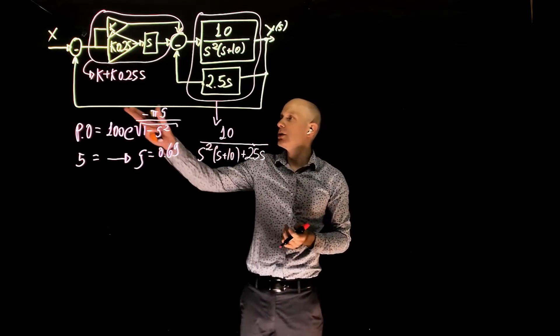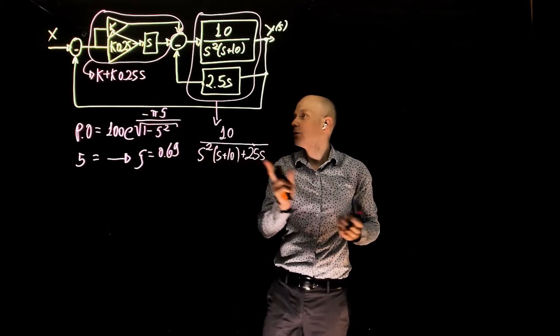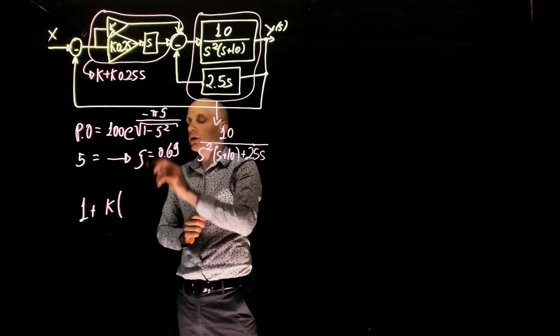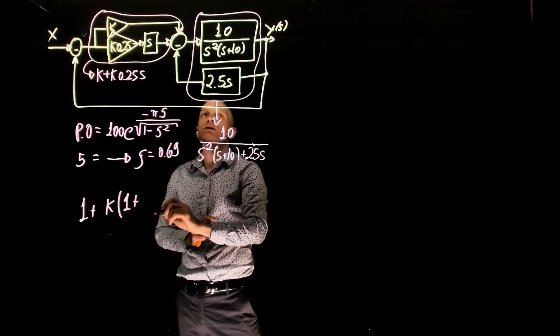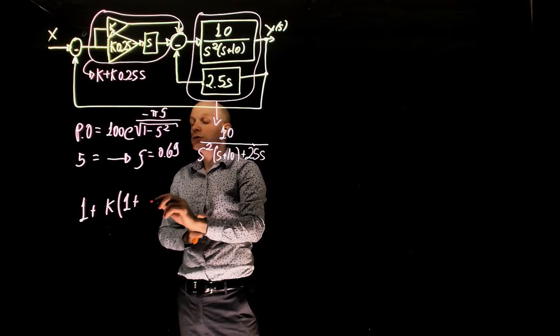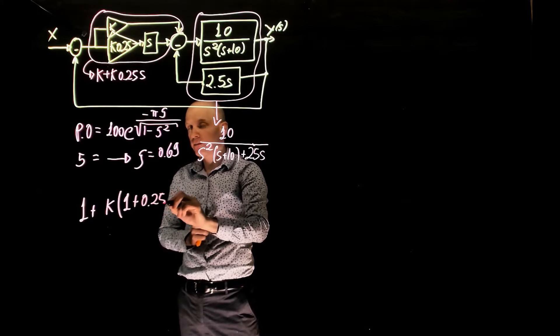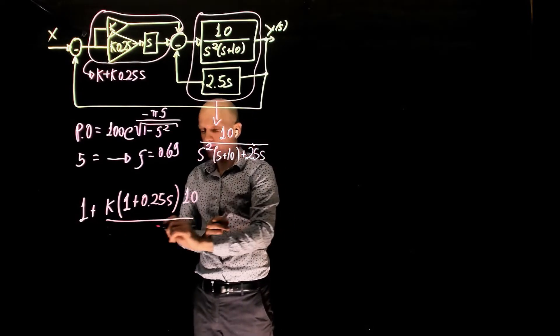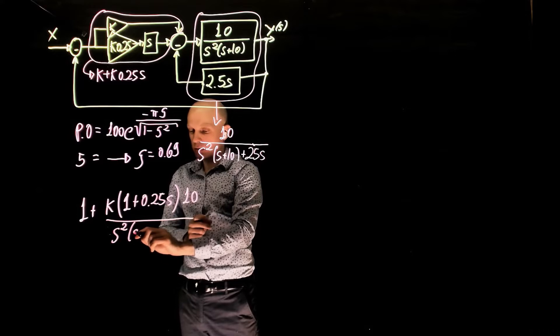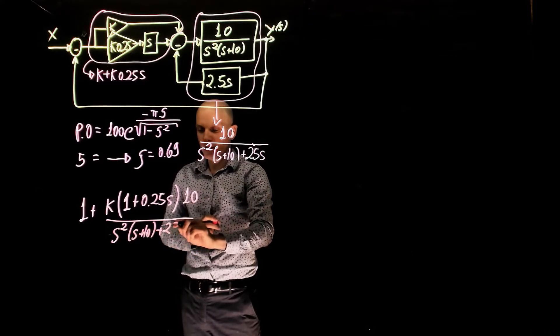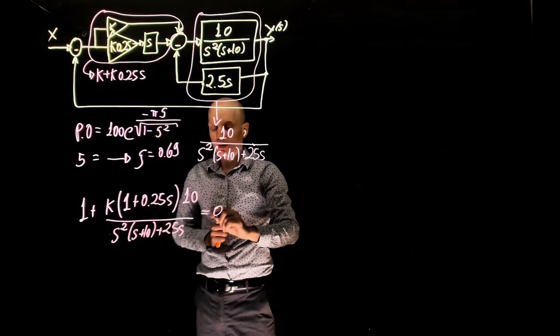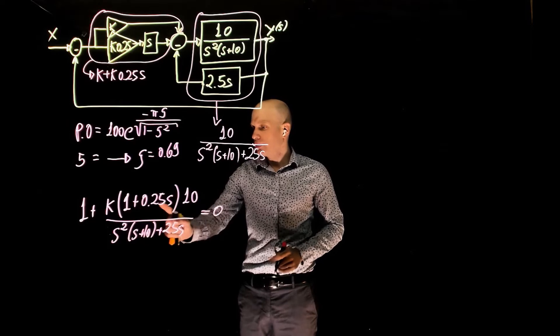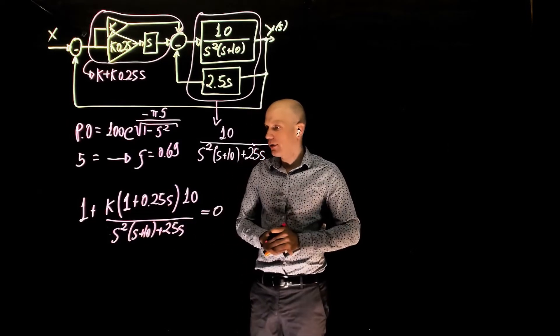So now the characteristic equation is simply the multiplication of this and that plus 1 equals 0, so we have 1 plus k, factoring out here we have 1 plus 0.25s times 10 divided by s squared times s plus 10 plus 25s equals 0. On top here we can now multiply out 10, so 10 plus 2.5s, and factor 2.5 out.